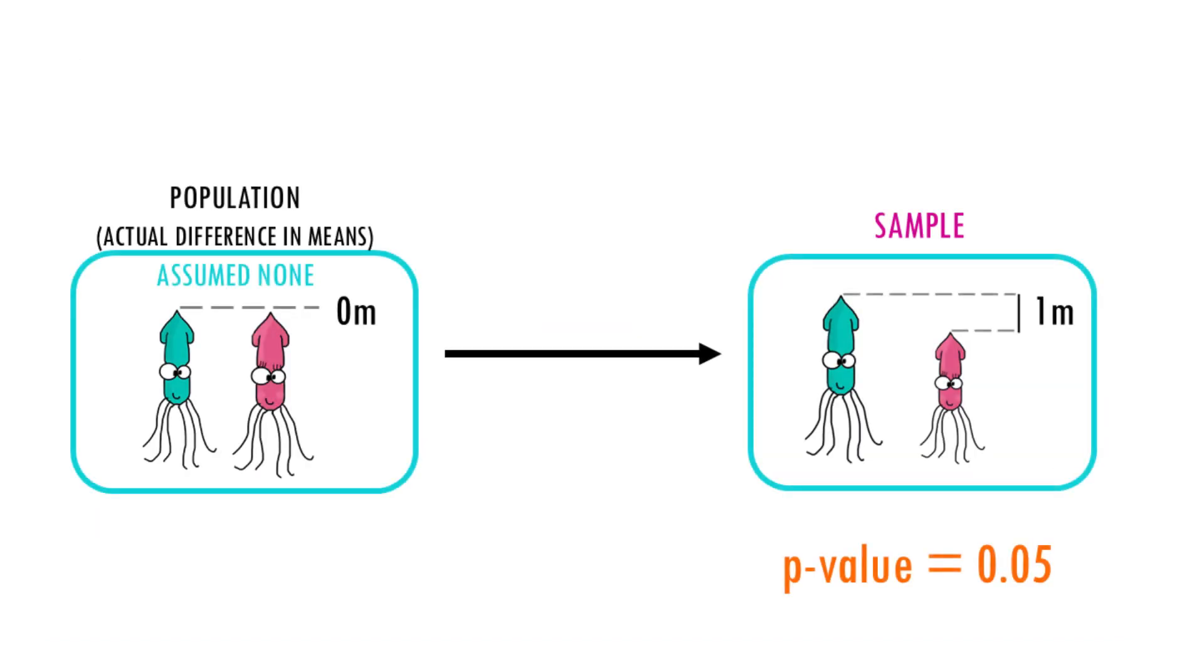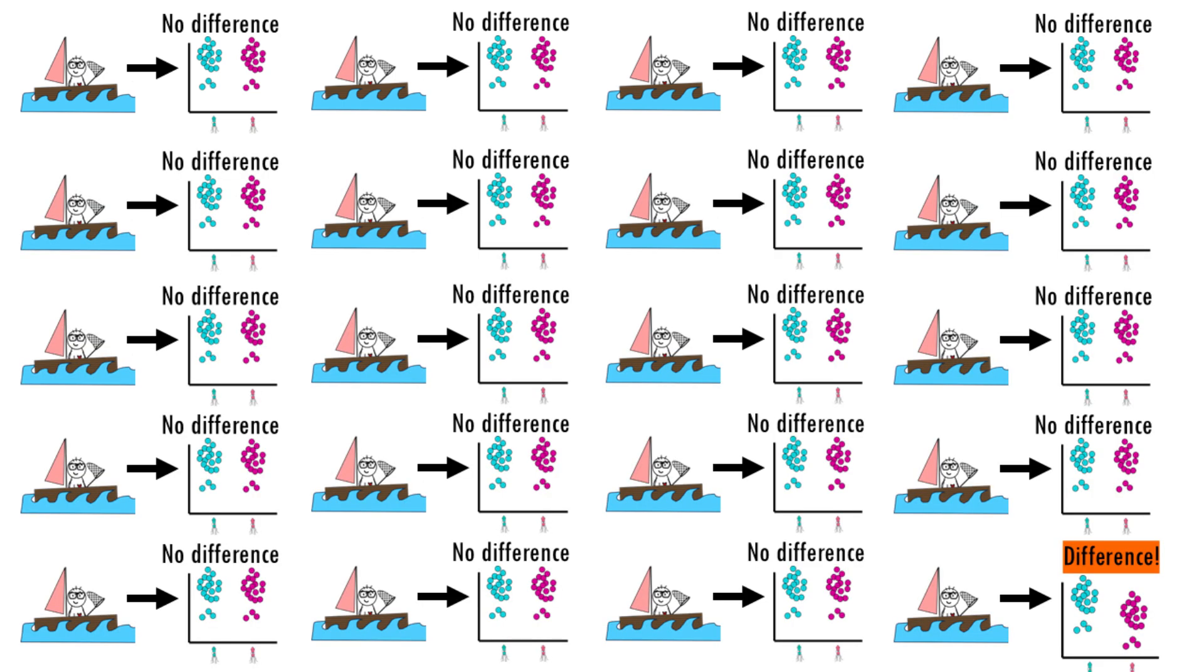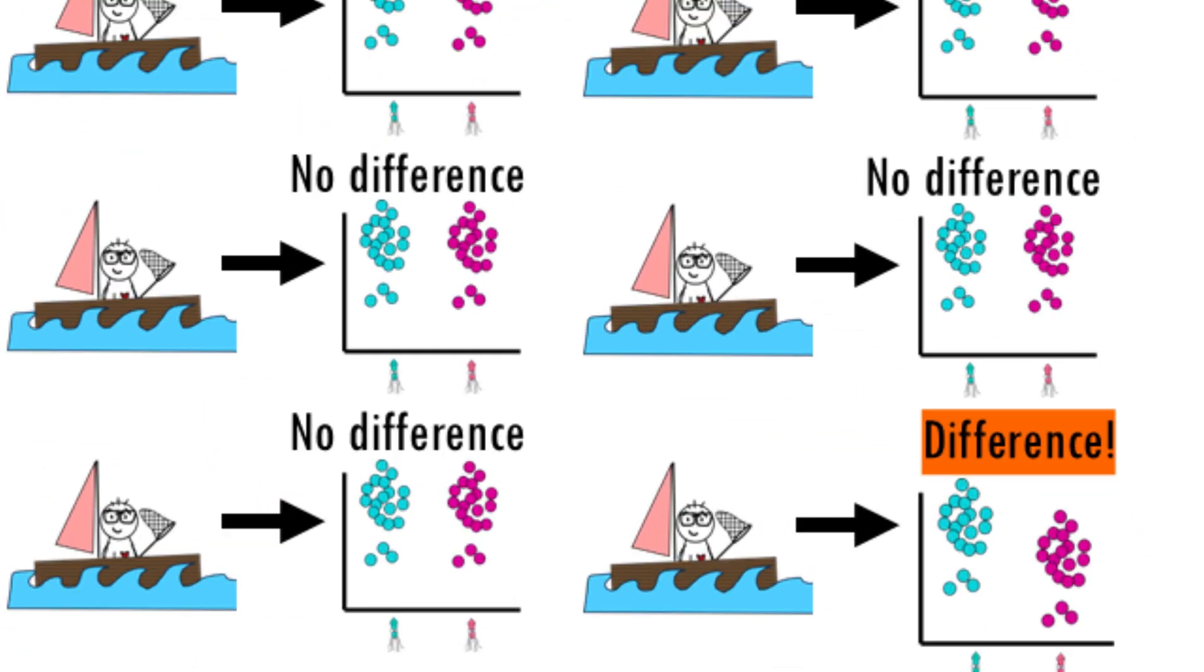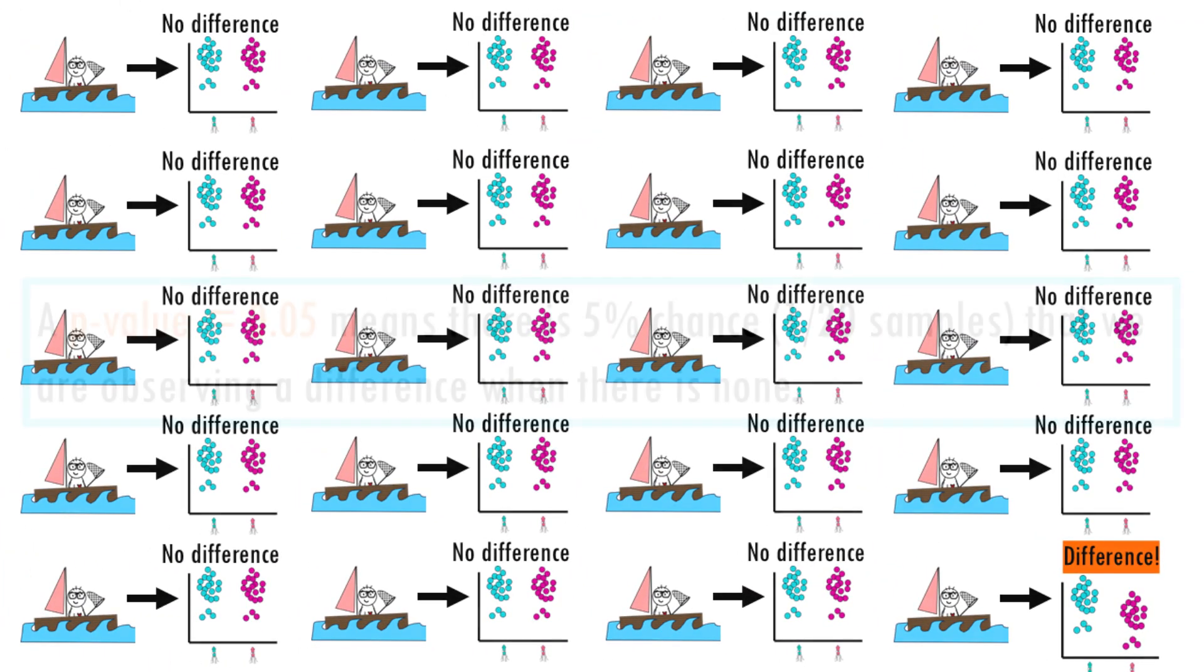In other words, assuming that there is actually no difference in the average size of squid, if we repeated the same experiment 20 times, so if we did 20 boat trips, we would expect one experiment to reveal an equal or stronger difference in means than the one we got.